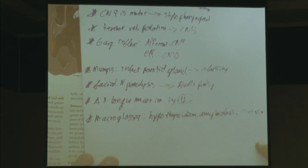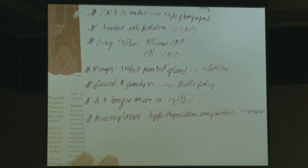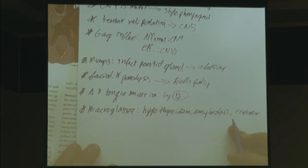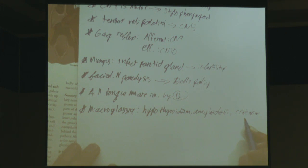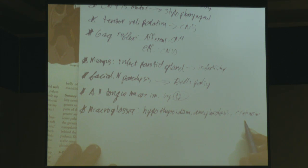If macroglossia goes untreated, it can actually get to the point where the person can't swallow and then can't breathe because their tongue is obstructing their airways. Cretinism is spelled C-R-E-T-I-N-I-S-M.